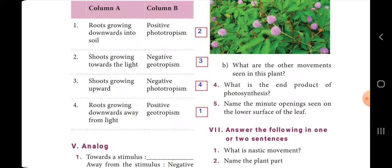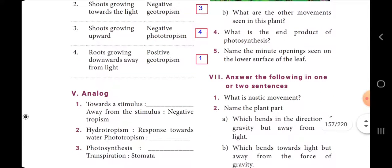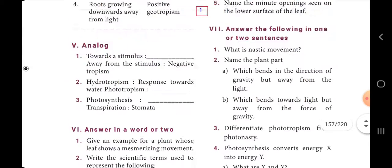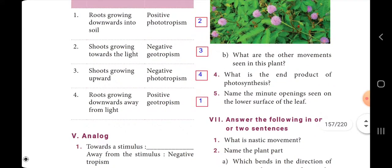Match the column: first one, root growing downwards in the soil — positive geotropism. Second one, shoots growing towards light — positive phototropism. Third one, shoots growing upward — negative geotropism. Fourth one, roots growing downward away from the light — negative phototropism.